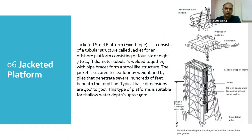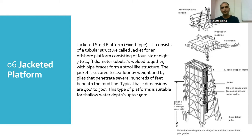Jacketed platform — the majority of all the platforms in ONGC, all the natural gas installations, are all in Mumbai High basically, and they are all 100% jacketed platforms. A jacketed platform, or fixed platform, consists of a tubular structure called a jacket, consisting of 4, 6, or 8 legs made of 7 to 14 foot diameter tubulars welded together.